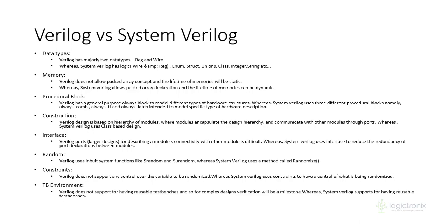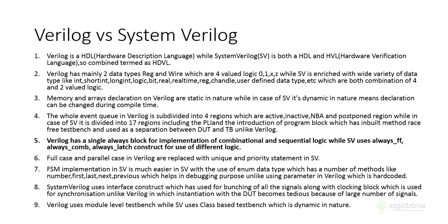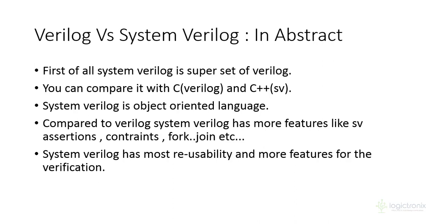Here is a comparison of Verilog versus SystemVerilog. SystemVerilog has more features like assertions, constraints, fork-join, and so on. It also increases usability and is the most preferred language in verification. SystemVerilog is object-oriented — you can compare it like C is to Verilog and C++ is to SystemVerilog, meaning SystemVerilog is the superset of Verilog just as C++ is the superset of C.